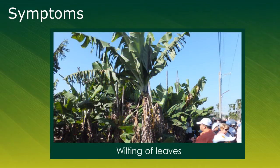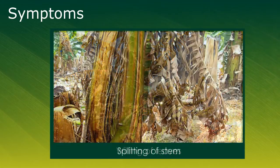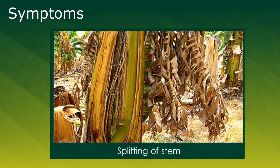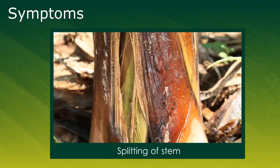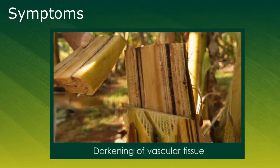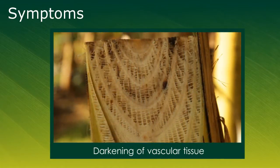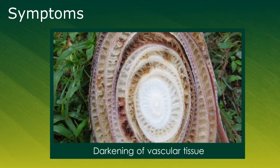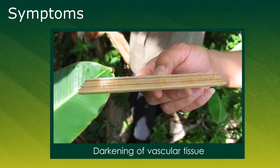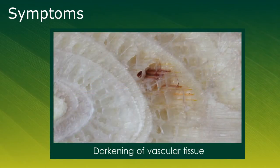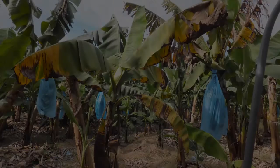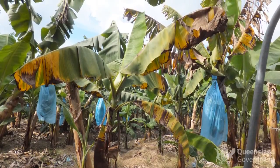The lower leaves tend to wilt and form what can be described as a skirt around the plant. The younger leaves may remain green and upright. The stem of an infected plant may also split, and darkening of the vascular tissue within the stem is also likely, ranging in colour from reddish to dark brown to black.